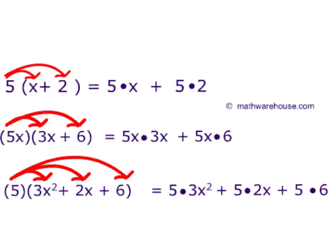Here we have 5, and then in parentheses, x plus 2. So if we distribute the 5 over the x, we have 5 times x, and distribute the 5 over the 2, we have 5 times 2. So what we would end up with as our answer to that would be 5x plus 10.